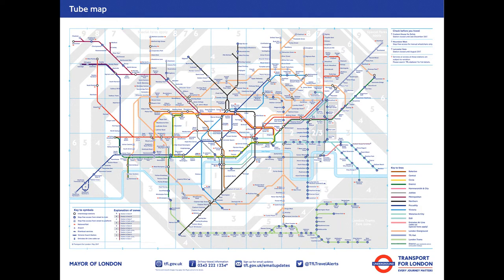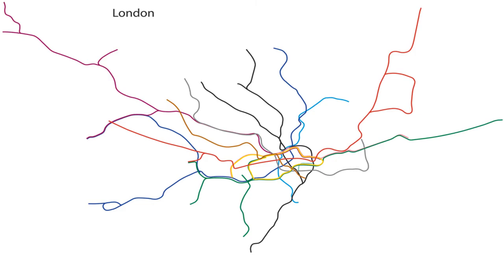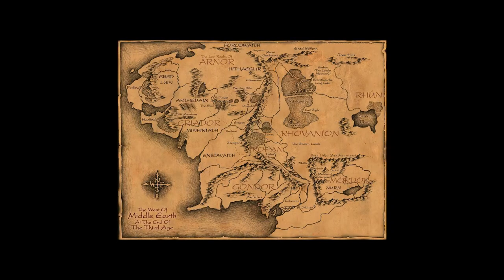But not every map works this way. The iconic London Underground map is designed to be easy to read, but it isn't an accurate representation of where the stations actually are. This map represents the world population, with one square representing one million people — it only uses the shape of a world map for aesthetic reasons. And of course, as this series should make clear, maps don't actually have to represent the real Earth. So the dictionary definition of the word 'map' is actually pretty useless for understanding cartography.